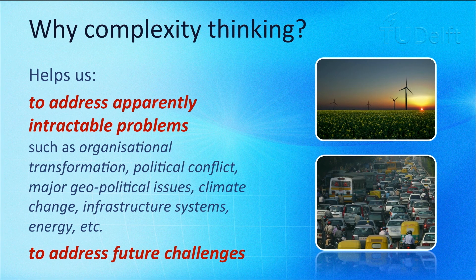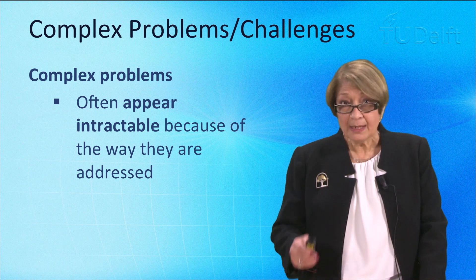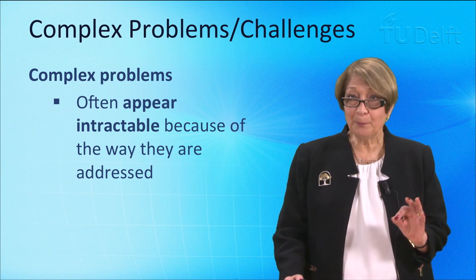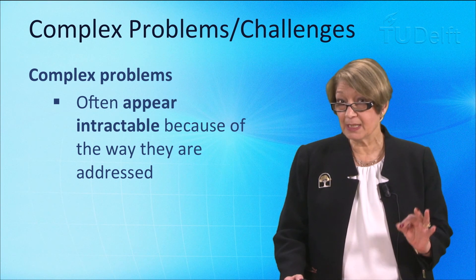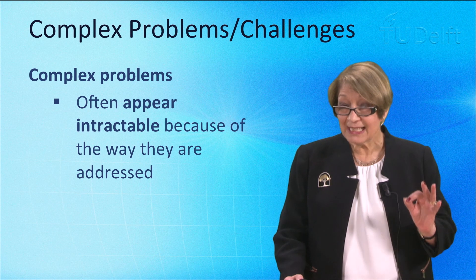Complexity thinking also helps us to address what we might call apparently intractable problems — problems such as organisational transformation, political conflict, major geopolitical issues, climate change, infrastructure systems, and energy. These are apparently intractable problems in the sense that they are very difficult, do not have a single or simple solution, and are very difficult to address. But this also applies to future challenges, not just past ones. Complex problems often appear intractable because of the way they are addressed; they are not necessarily inherently intractable.